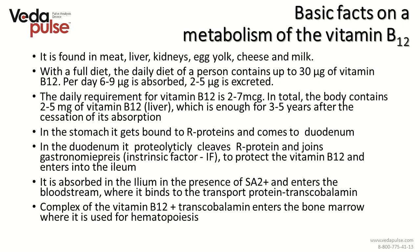Basic facts on vitamin B12 metabolism: it is found in meat, liver, kidneys, egg yolk, cheese and milk. With a full diet, the daily diet contains up to 30 mg of vitamin B12; 6 to 9 mg is absorbed per day and 2 to 5 mg is excreted. The daily requirement is 2 to 7 mg. Hypothetically, if a person stops getting vitamin B12 completely, there is about 2 to 5 mg stored in the liver, which is enough for another 3 to 5 years.